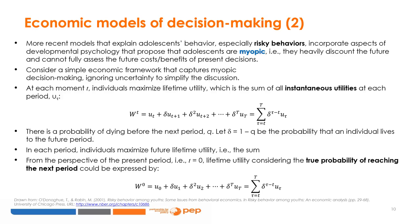This framework can help shed light on decisions made by adolescents to engage in risky behaviors with potentially serious future consequences. Consider a model where agents are myopic and we ignore uncertainty to simplify the discussion. Individuals wish to maximize lifetime utility, which is the sum of utility at each period — present and future. W-t is lifetime utility; instantaneous utility at each period is denominated by U-tau, where tau indexes each time period beginning at present period t. At any moment in time, there exists a probability of death q, so the probability of survival to the next period is 1 minus q, denominated delta. Individuals discount each future period by this probability of survival.